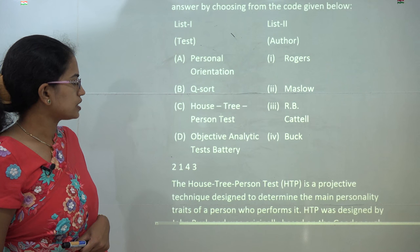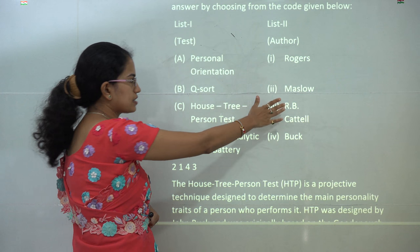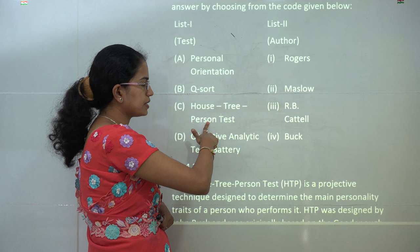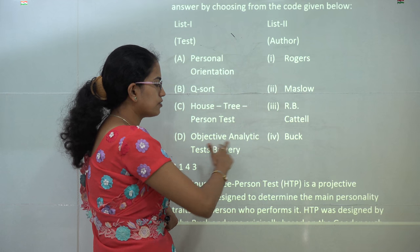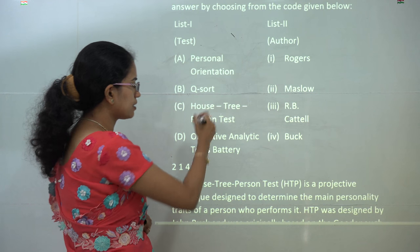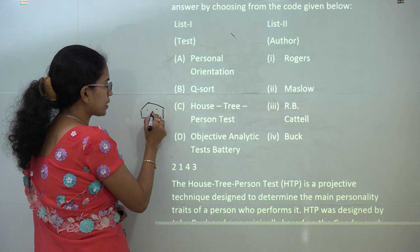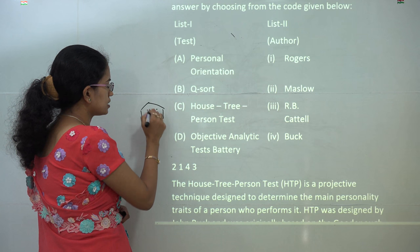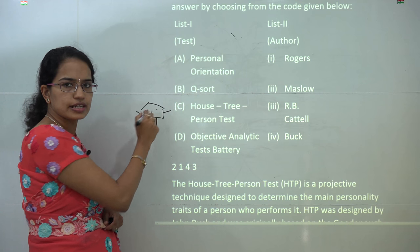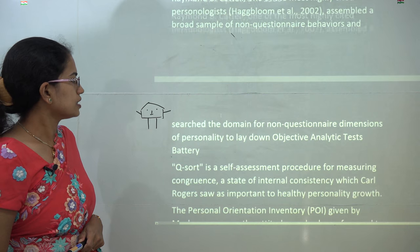The next question, you have to match the test with the author. So personal orientation given by Maslow, Q-sort by Rogers. You have HTP house, tree, and person test by Buck, and you have the objective analytical test by Cattell. Now, HTP is a kind of projective test where you are asked to draw all together in a single diagram. So this is how you try to explain: this is a house, you have a person, and you have a tree that is shown. So that is a house, person, and tree test.